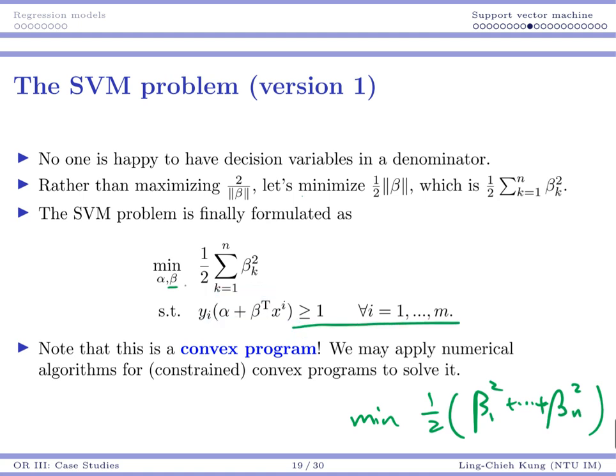What's more interesting is that this formulation is nice because this is a convex program. Your constraints are linear, your objective is convex, and you are minimizing a convex function. So even though you have several constraints, you may use algorithms to solve these constrained convex programs.